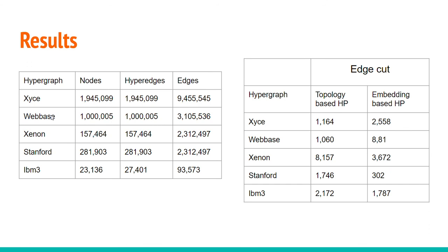Here I show some results by adding the extra embedding information to our previous topology-based multi-level hypergraph partitioner. On the left we have five hypergraphs, and on the right I compare the quality before and after using the extra embedding information. As you can see, in almost all hypergraphs except one, the quality has improved.